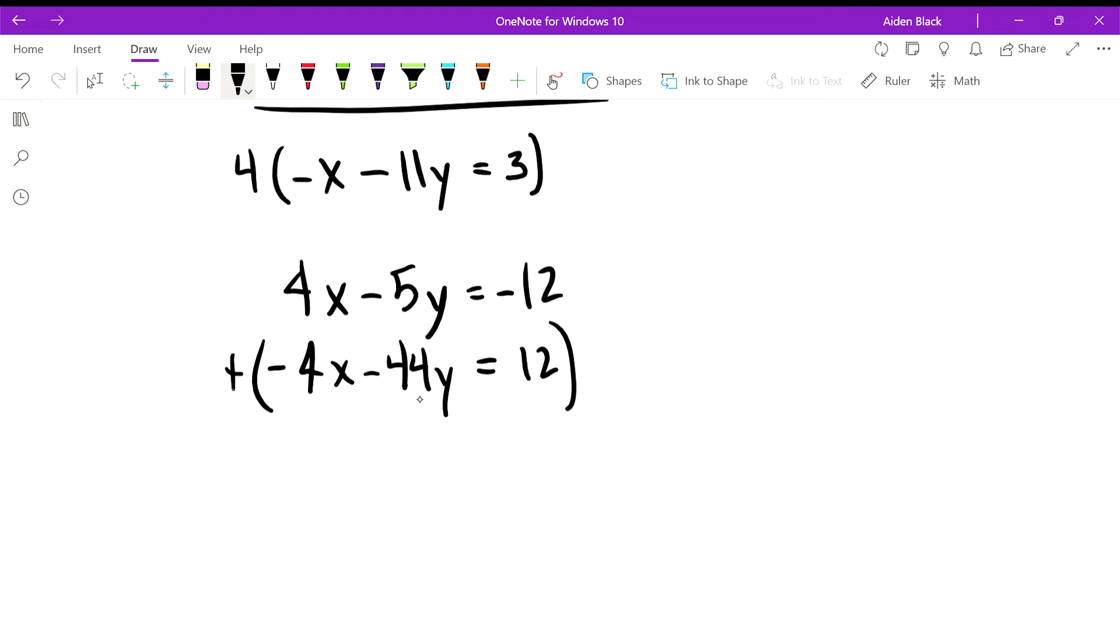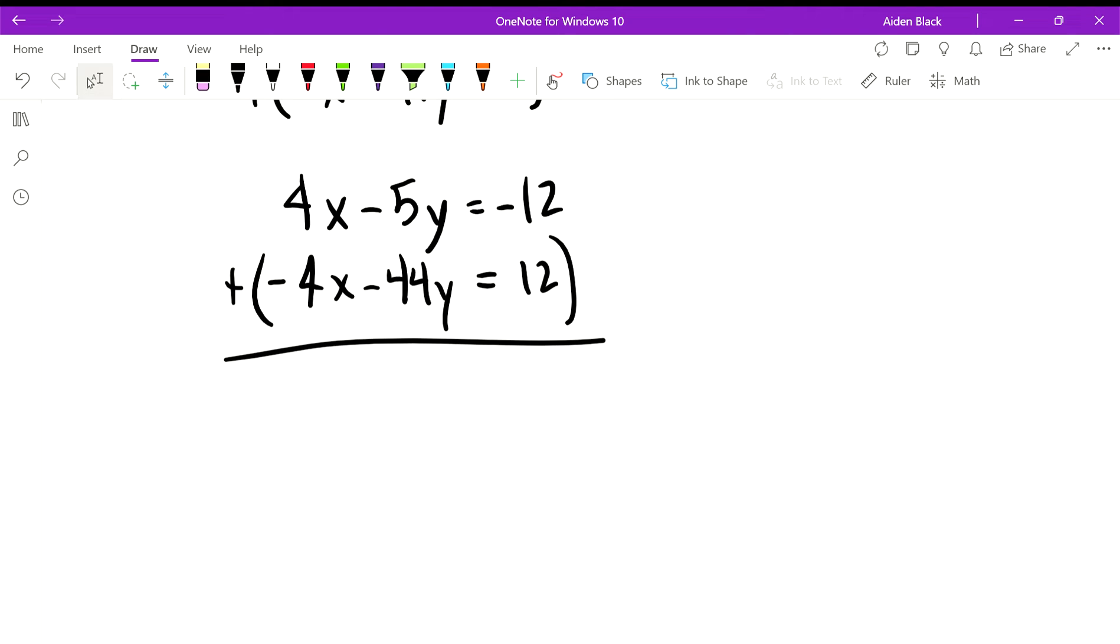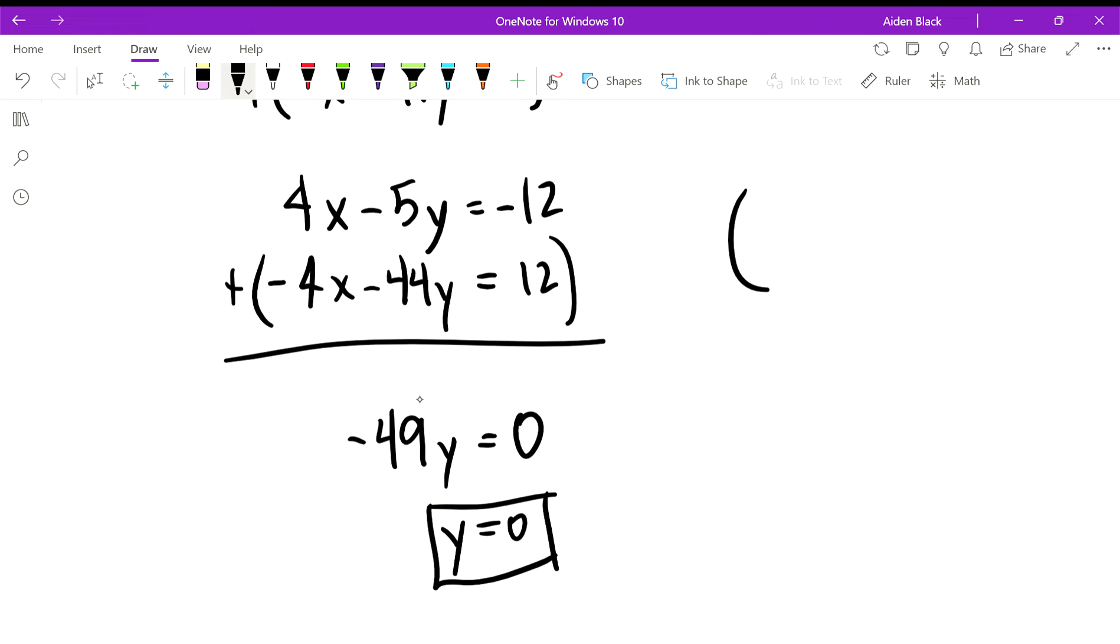When we add, 4x minus 4x is 0. When we add these two, we get negative 49y. And then when we add these two, we get 0, so we know y equals 0.